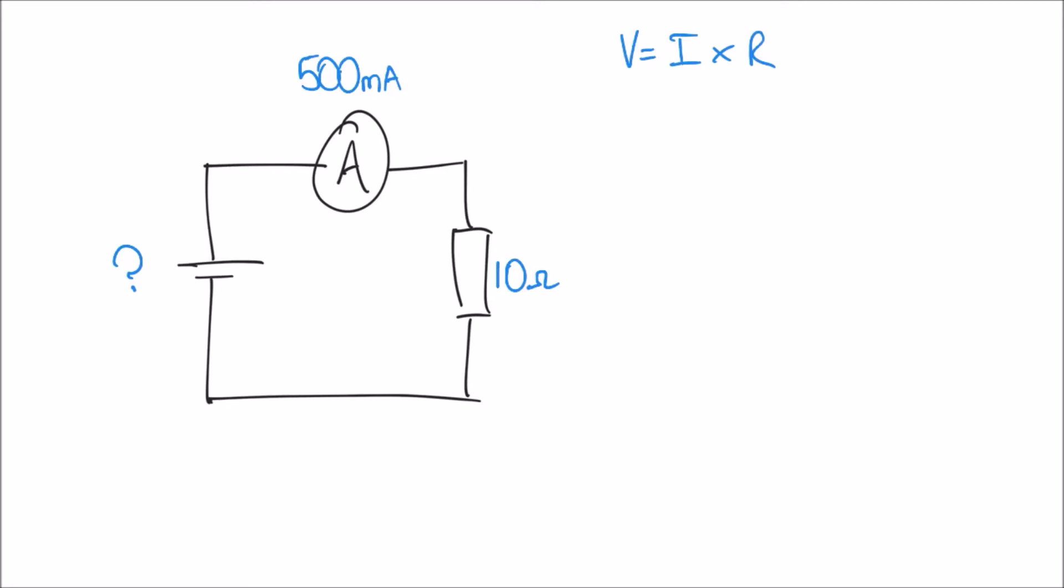Now we run into a problem here because our current that we're measuring is 500 milliamps, and that's not really the standard form of unit that we should be using in the equation. There's 1,000 milliamps in an amp, so 500 milliamps is the same as 0.5 amps. We divide by 1,000 to get our current in amps.